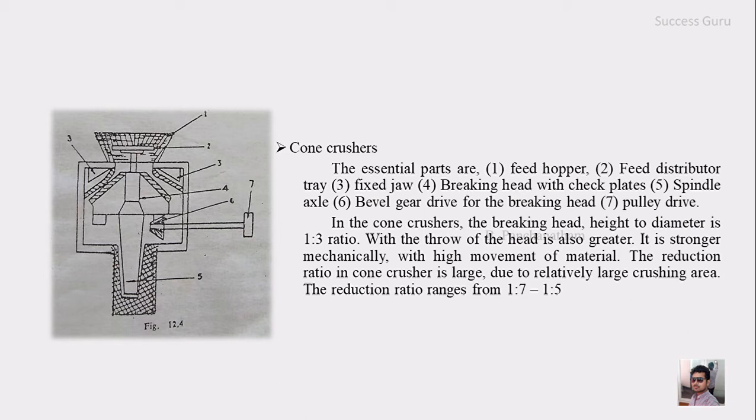This is how the cone crusher is working. The feed is deposited through this portion and distributed through this plate. Whatever feed passes from here will be crushed in this region, that is the breaking portion. This breaking portion can be maintained and manipulated - you can reduce or increase the size with the help of this pulley drive.